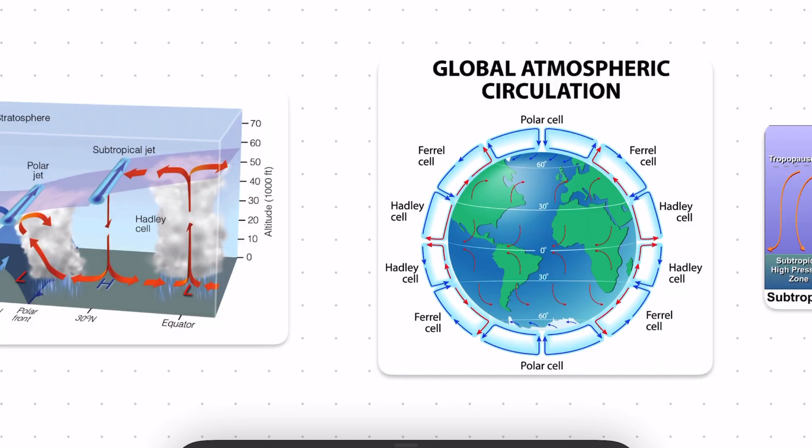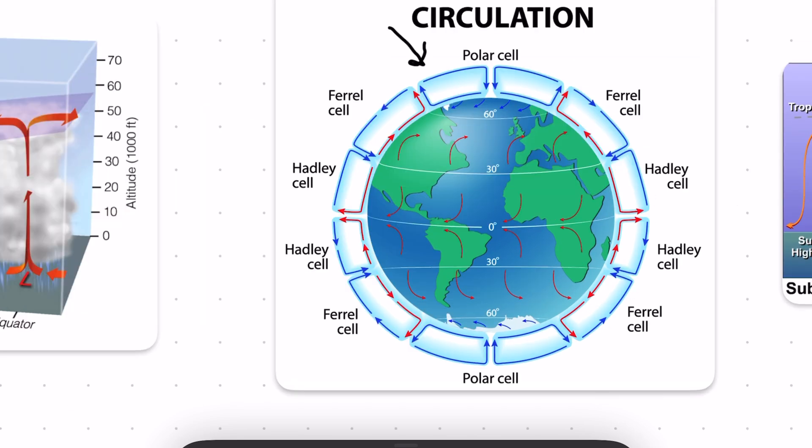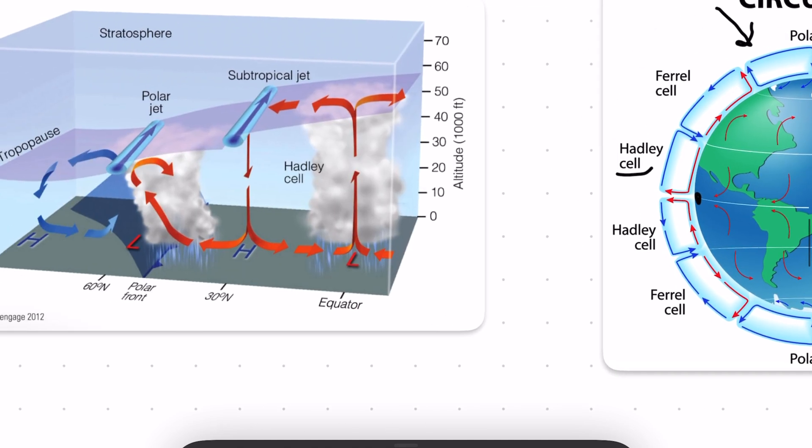These high pressure zones are created by the interaction of the three main atmospheric wind cells. It begins with the Hadley cell, where warm, humid air on the equator begins to rise. Whenever you have rising humid air, this is low pressure, and it generates rainfall.